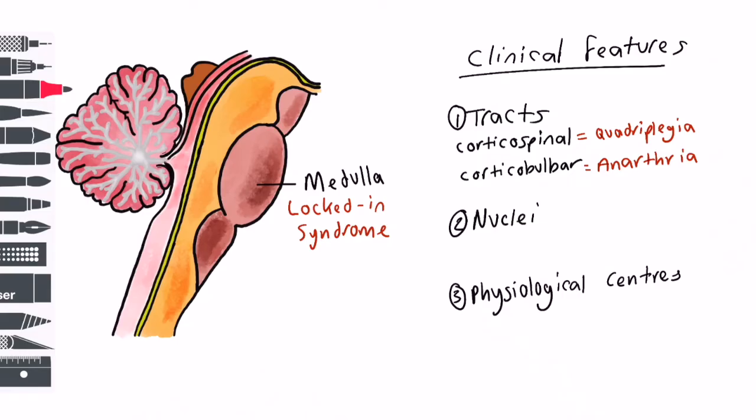There are several cranial nerve nuclei involved, but clinically, bilateral damage to the abducens nuclei restricts horizontal eye movement. However, vertical gaze is not affected as the oculomotor nucleus lies in the midbrain and is thus unaffected.